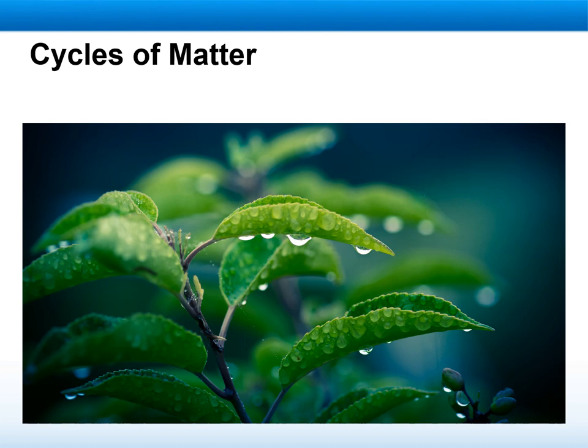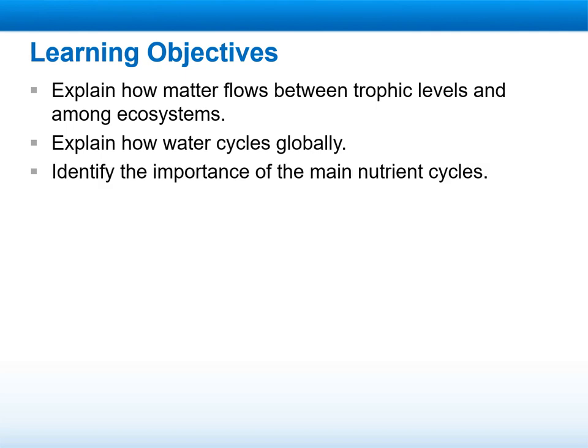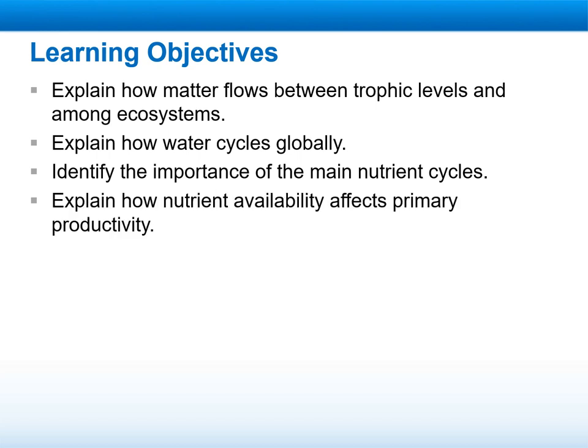We will talk about the quantity or the percentage of these molecules present in our body. In this chapter we will explain how matter flows between trophic levels and among the ecosystem. We will talk about water cycles and then the importance of some molecules as nutrients in their nutrient cycles — carbon, oxygen, and nitrogen — and explain how nutrient availability affects the productivity for each molecule.